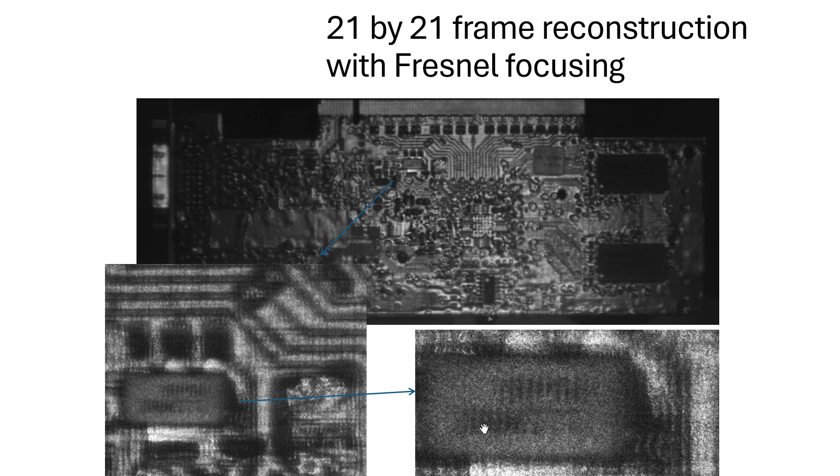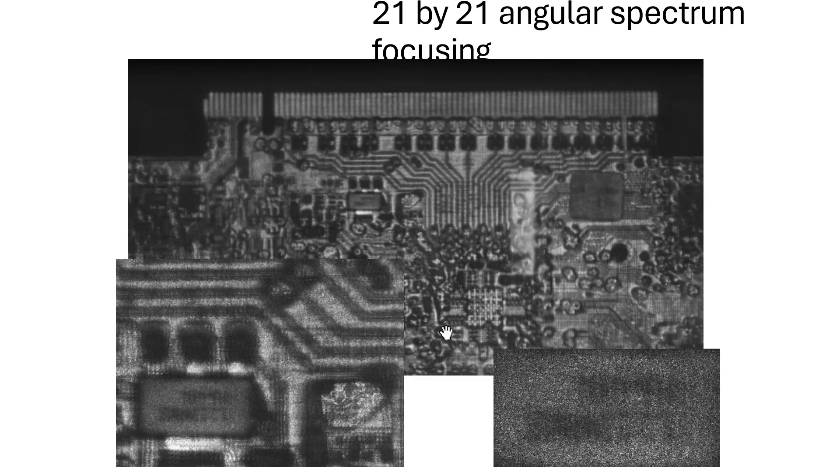Once we have the field, because we have the actual field here rather than an image of the object, we can also refocus. So here's an example of improving the resolution a little bit by taking the propagated field and finding its optimal focal position.